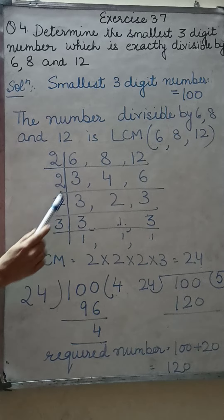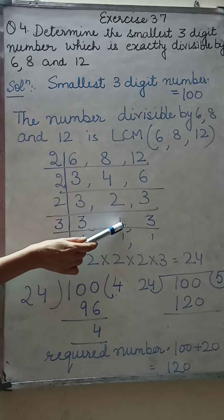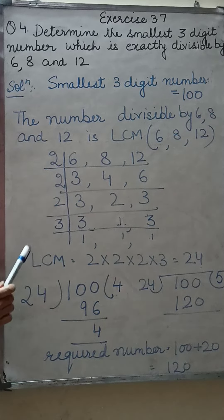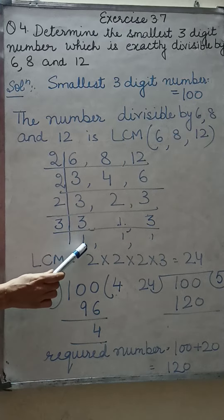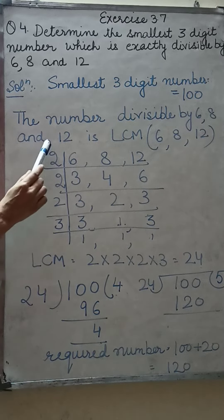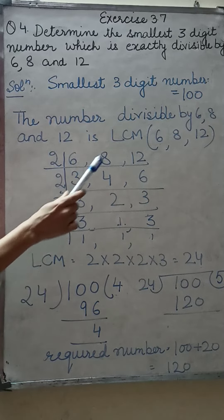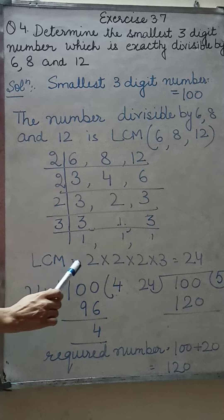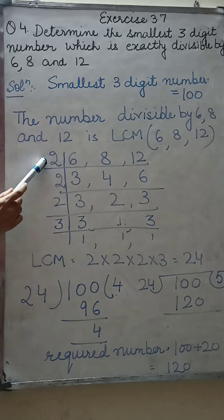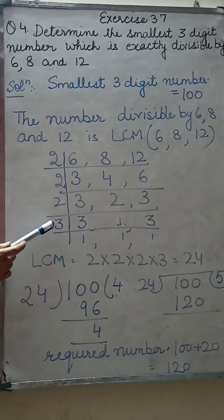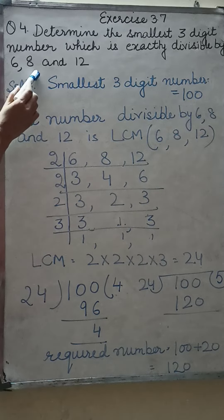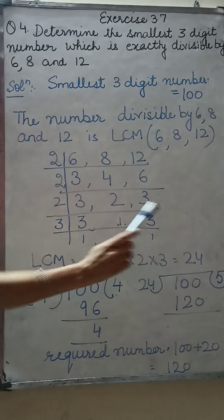Now 2 is here again, so we are dividing by 2. This 3 will remain as it is. 2 times 1 is 2, 3 stays as it is. Now divide by 3: 3 times 1 is 3, 1, 3 times 1 is 3. So the product of these prime numbers is the LCM of 6, 8, and 12. LCM of 6, 8, and 12 is 2 × 2 × 2 × 3, which equals 24. So the least common multiple divisible by 6, 8, and 12 is 24.